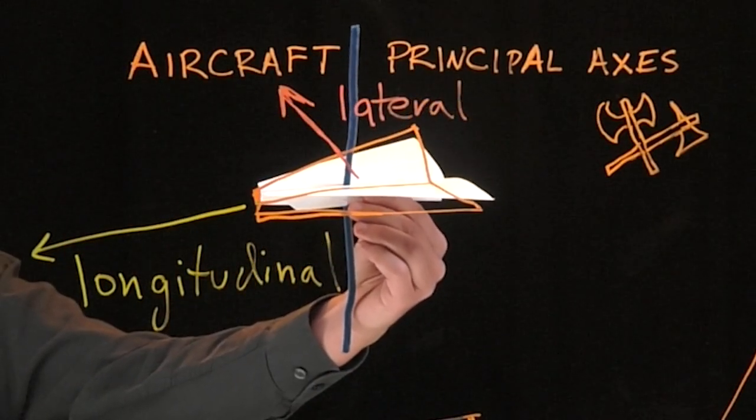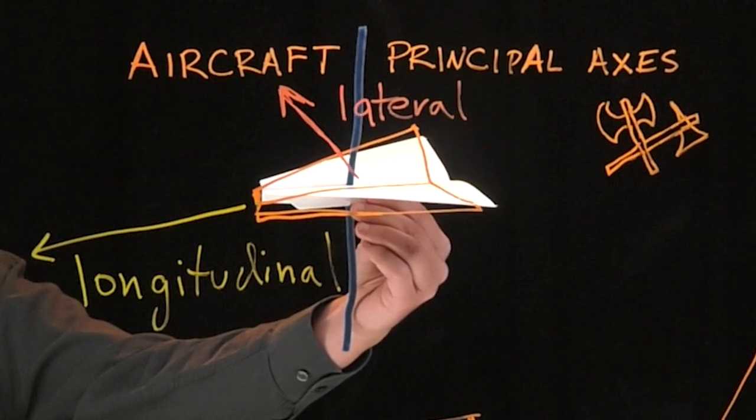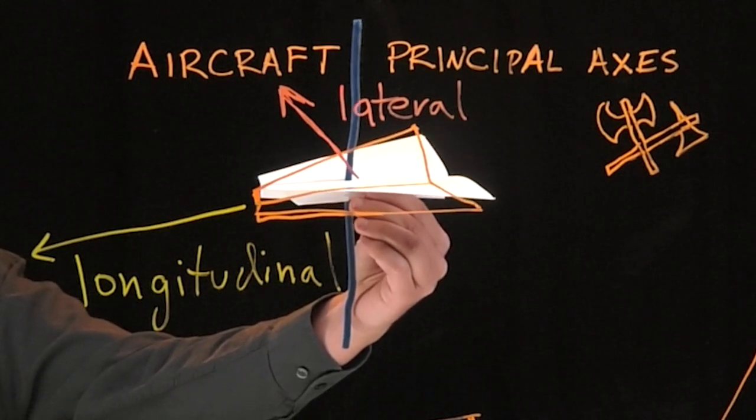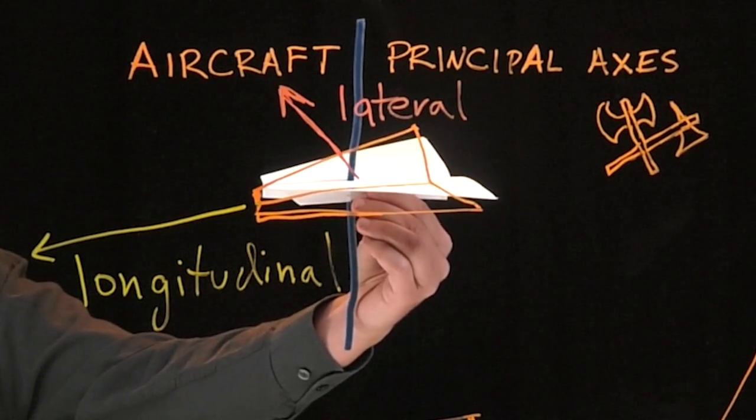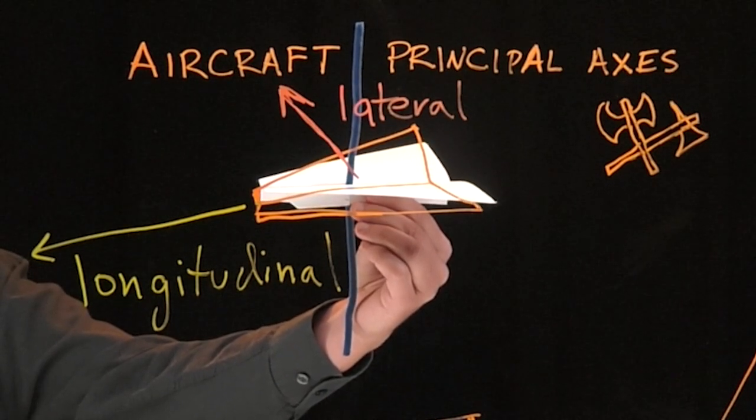The third axis runs up and down, extending either from above or down below the plane. Obviously, running up and down, we use the word for up and down which is vertical. So this axis is going to be known as the vertical axis.